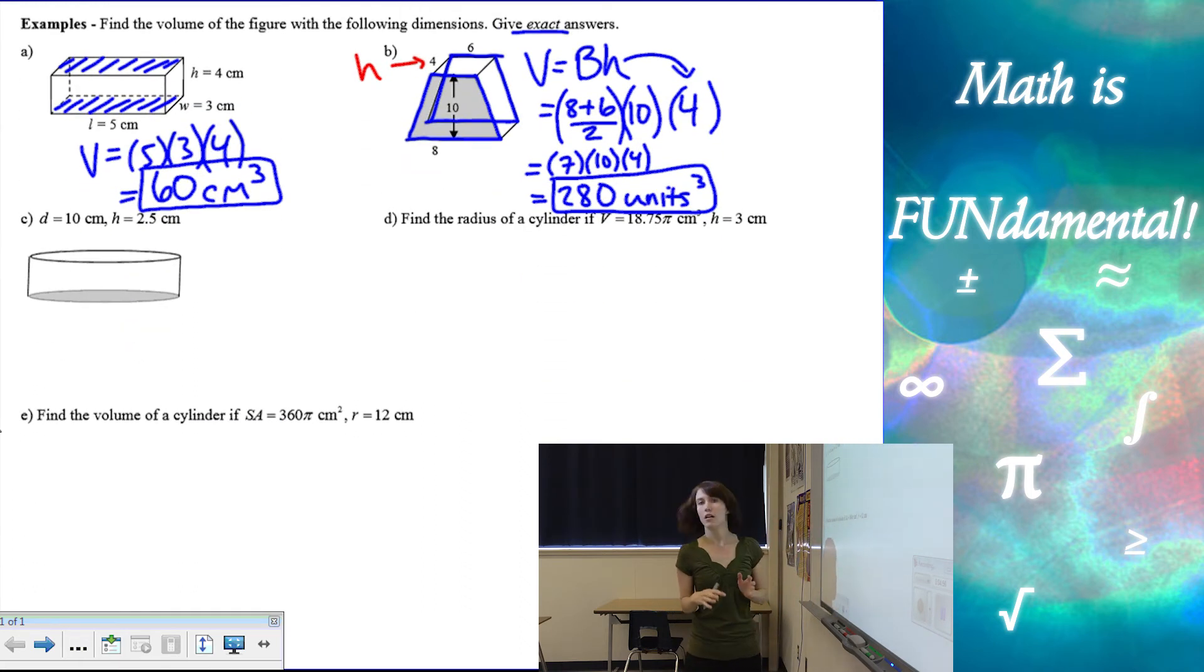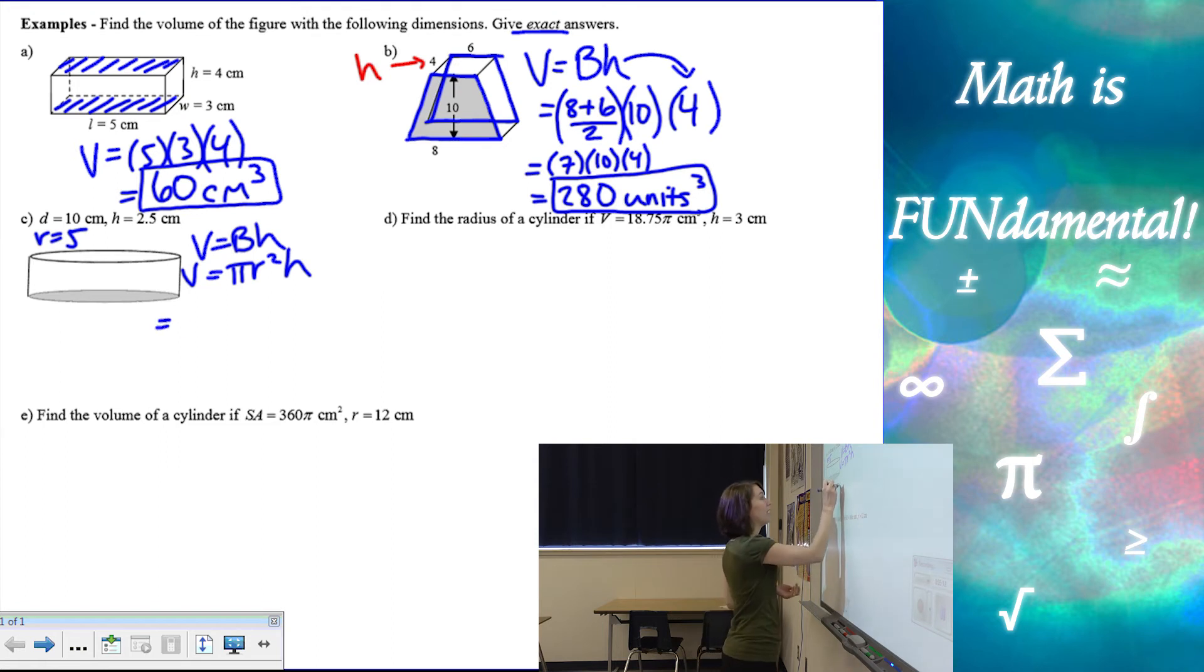Let's look at our cylinder. So again, it's just area of the base times the height and area of the base of a cylinder is pi r squared. So I have diameter and the height. I need radius, which is going to be half of my diameter. And then I can use my formula. We have pi times radius squared times the height, which is 2.5. And they wanted exact answers. So you're not going to use your calculator to multiply by pi.